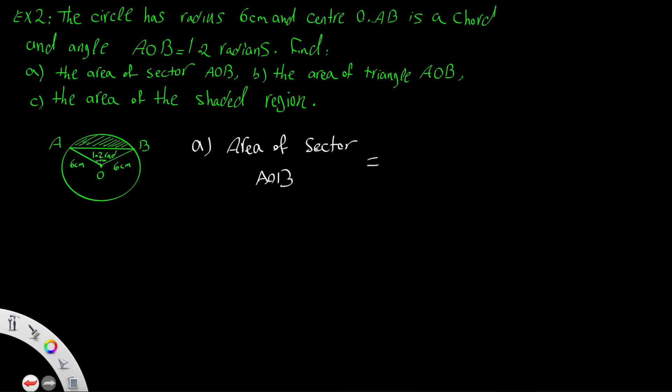Since the angle is in radians, it will be 1/2 r²θ, which is 1/2 × 6² × 1.2, giving an answer of 21.6 square centimeters.